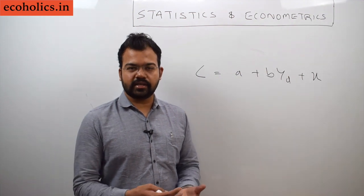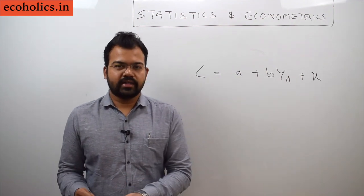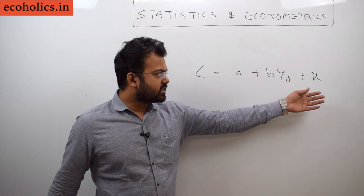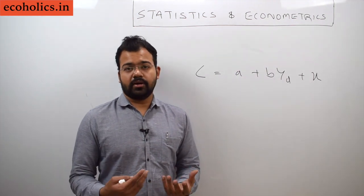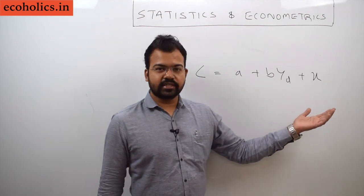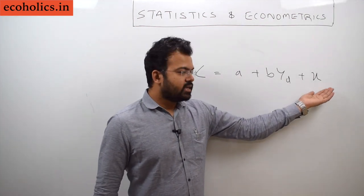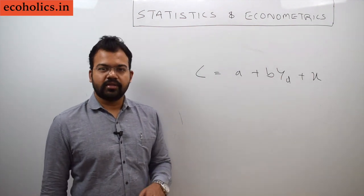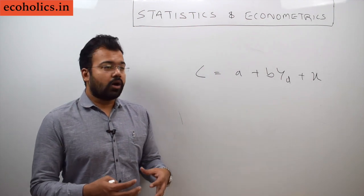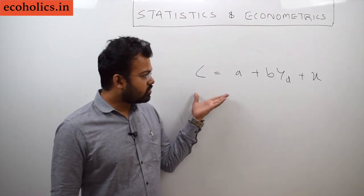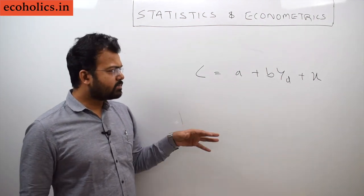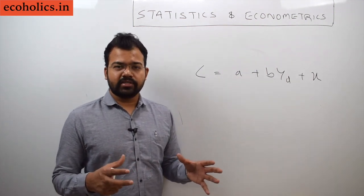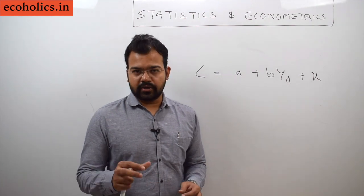Econometrics is both an art and a science — we cannot say it is a pure science like physical sciences. We need to take into consideration other factors that may or may not be visible. The effect of these factors is captured in the disturbance or error term, the stochastic, to account for real world phenomena that may also impact the level of consumption. We will build up this equation further in future lectures.